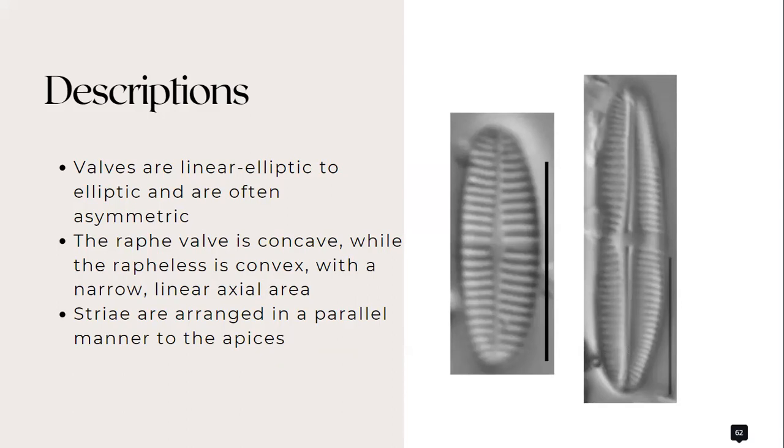The raphe valve is concave while the rapheless is convex with a narrow linear axial area. The striae are arranged in a parallel manner to the apices.